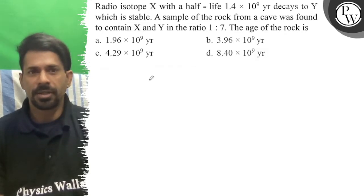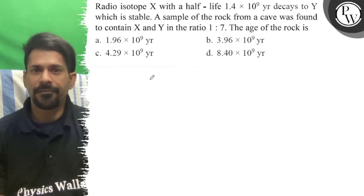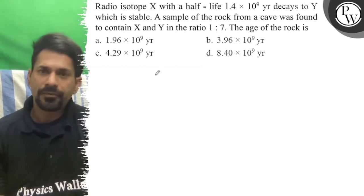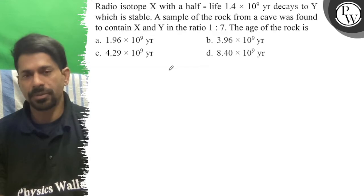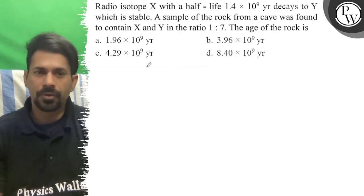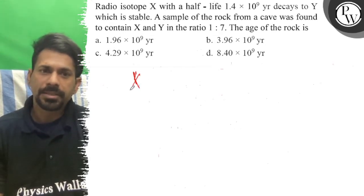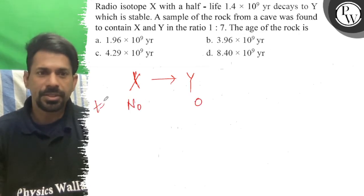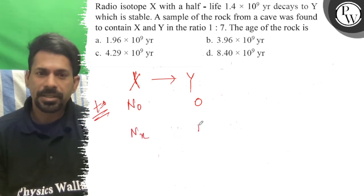Let's see the question. The isotope X with half-life 1.4×10⁹ years decays to Y, which is stable. A sample of rock from a cave was found to contain X and Y in the ratio 1:7. To find the age of the rock: X is converting to Y, where Y is stable. Initially it has N₀, with initial amount of Y equal to 0, and finally it has Nx and Ny which are in the ratio 1:7.